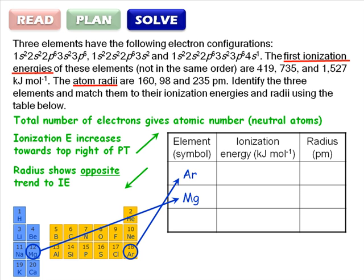2 plus 2 plus 6 plus 2 plus 6 plus 1 is 19 electrons, so our final element must be potassium.